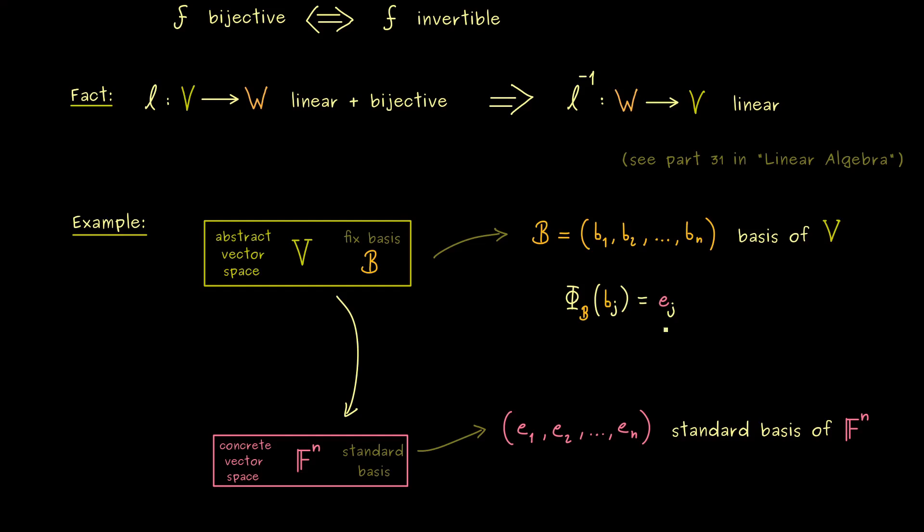More concretely, bj is sent to ej. And now what we get is a linear map and we can also show it's a bijective map.